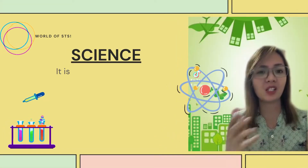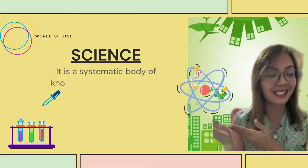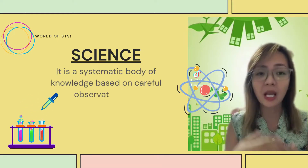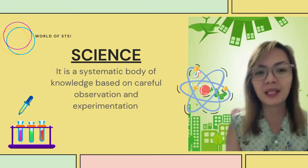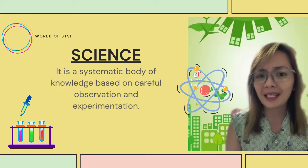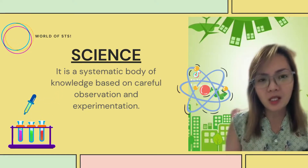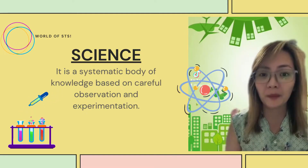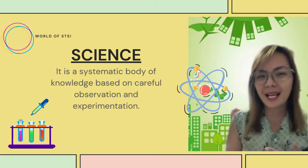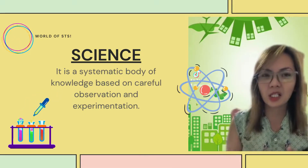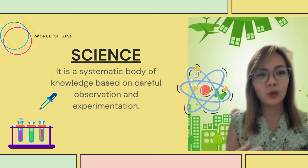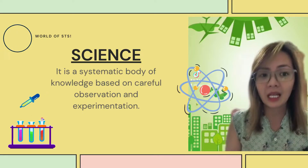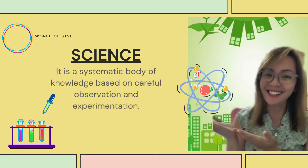Let's make it simple and start with what is Science? Science is a systematic body of knowledge based on careful observation and experimentation. It is systematic, meaning it is a process, and when we talk about process, it refers to a step-by-step procedure. To simplify more, Science is a study of something. When you do the experiment and try to figure out more information about something, then you are technically doing Science.